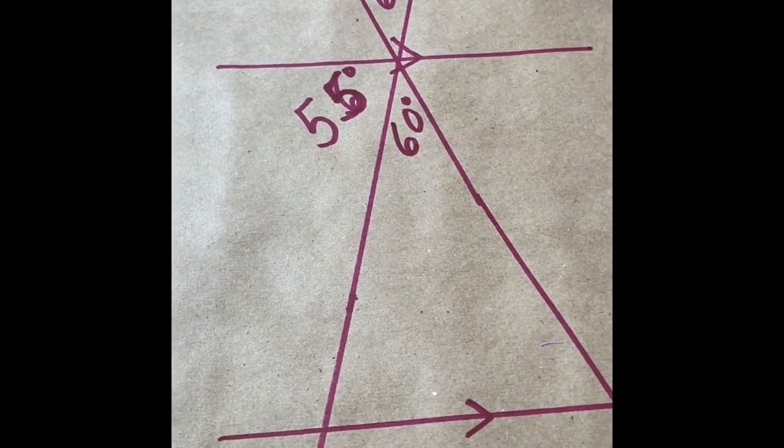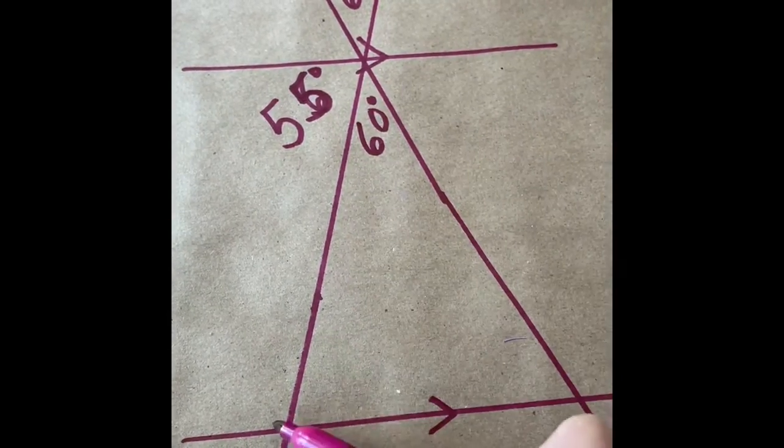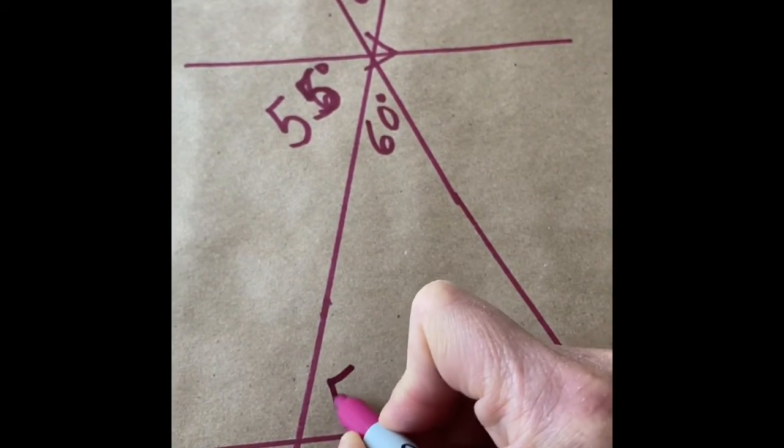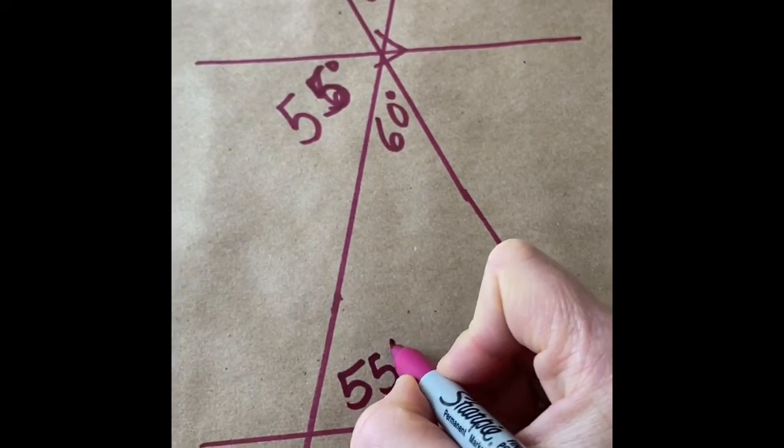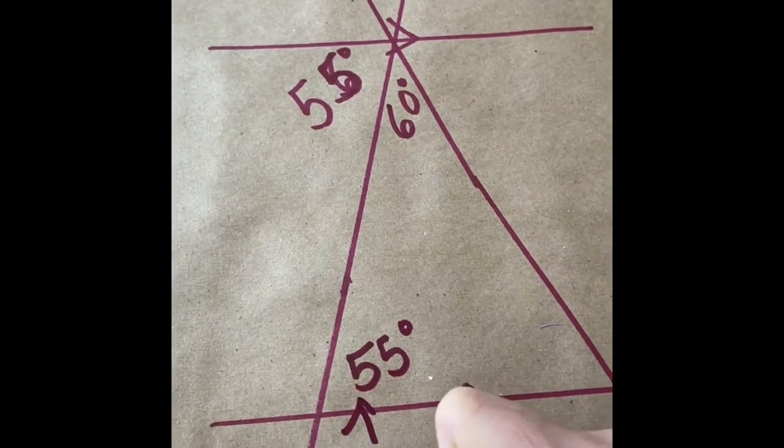I can see a Z pattern. I see that right here is a Z pattern. That means if this is 55, that means that this is also 55 because they are, the word is, alternate angles.